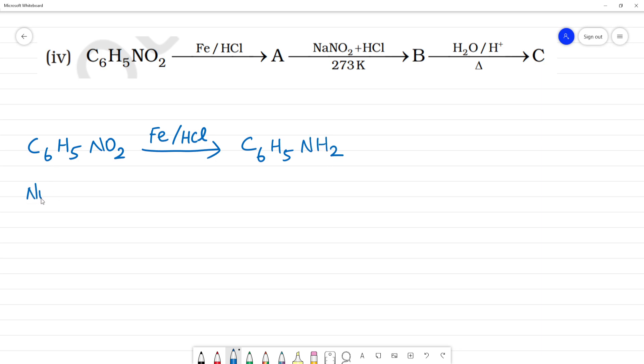This is nitrobenzene. The product C6H5NH2 is aniline. Aniline is A.